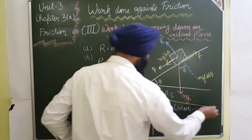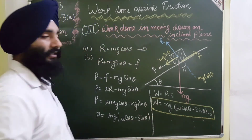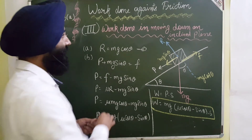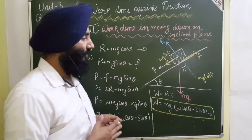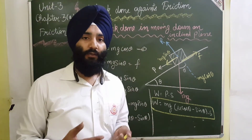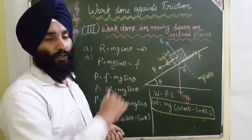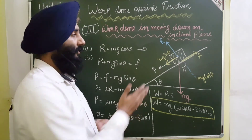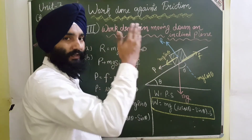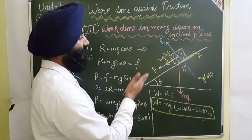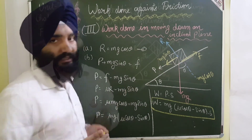This is the work done against frictional force when the body is coming downward. So in this way we calculated the value of work done for the horizontal plane, for the inclined plane when the body is moving upward, and the third case when the body is coming down.